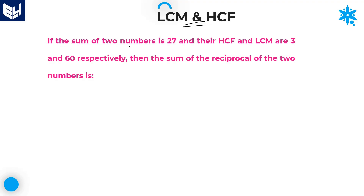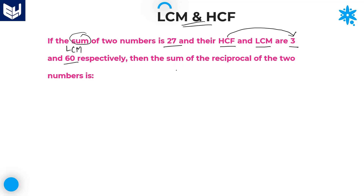See here, if the sum of two numbers is 27, and their HCF and LCM are 3 and 60 respectively. HCF is given as 3 and LCM is given as 60, and the sum of those two numbers is 27. The question is asking for the sum of reciprocals of those two numbers.